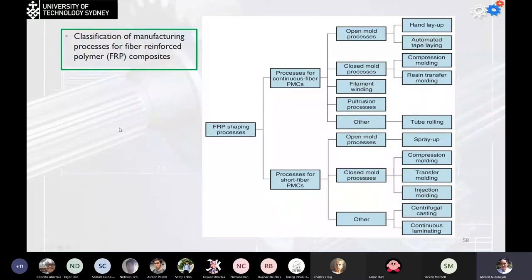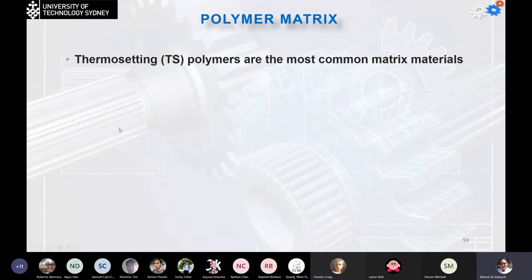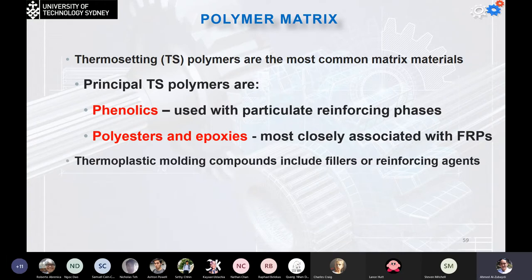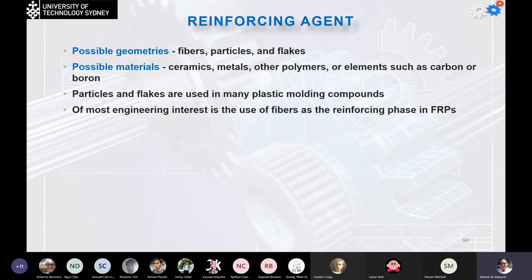Most of these products are used daily without people noticing. The polymer matrix is usually thermosetting polymers, which are the most common type of matrix material. The principal thermosetting polymers are phenolics, used with particulate reinforcement phases, and polyesters and epoxy, which are most closely associated with FRPs. Thermoplastic molding compounds include fillers or reinforcement agents, and all rubbers are reinforced with carbon black, as in tires.